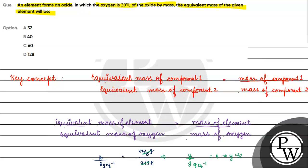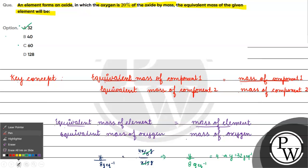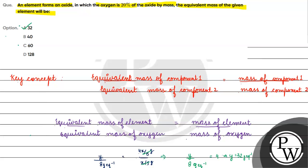The correct answer for this question will be Option A. The equivalent mass of the element will be equal to 32 grams per equivalent. I hope you understood it well. Thank you and all the best.